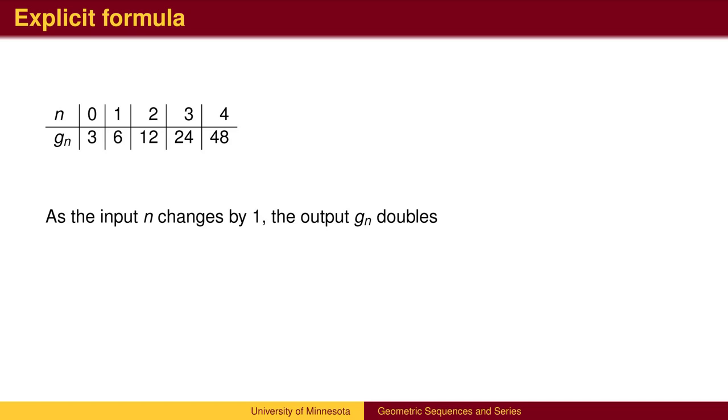The sequence is geometric because as we step forward to the next term, the output is doubled. The formula for the output, g sub n, is now the starting value of 3 multiplied by 2 to the n.